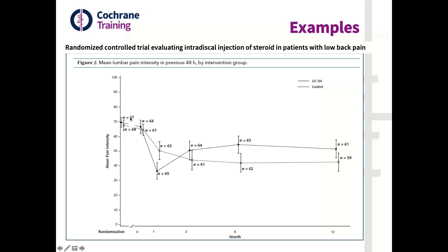We can see that from the beginning of the study, in the intervention group, there is first an important decrease in pain level. But from three months, there is an increase in pain level that becomes higher compared to the control group. In the control group, there is a decrease in pain level in the first month, but much less than after the injections, and then it remains quite stable.